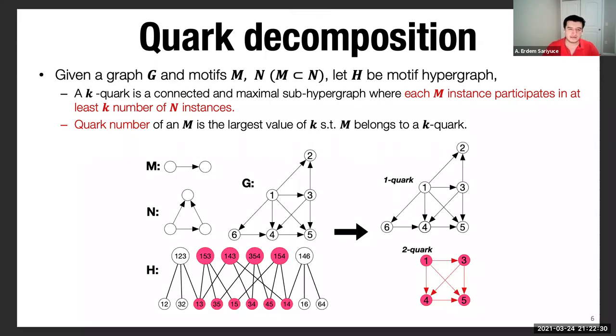To give an example, here I denote, I give M and N. M is a unidirectional edge, N is a cyclic triangle, and our input graph is this. According to this graph and those two pairs, the hypergraph is here. We have basically all the edges at the bottom and all the cyclics at the top as the hyper edges. Here we have a two quark marked in pink and the entire hypergraph is a one quark. I show both on the right.